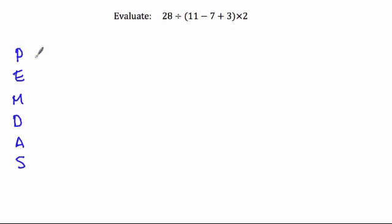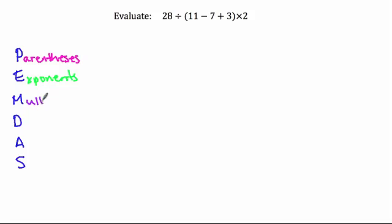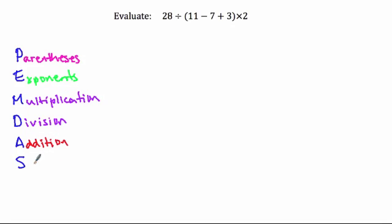We have P which stands for parentheses, and that comes first. Then you have E for exponents, M for multiplication, D for division, A for addition, and S for subtraction.